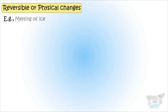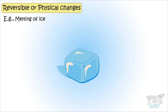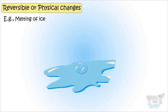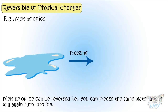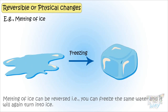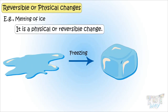Let's take another example: melting of ice. Here we have a cube of ice. Let it stay for some time and it will melt, so it's changed from solid state to liquid state. But this change can be reversed — you can freeze the same water and it will again turn into ice. So melting is a physical or a reversible change.